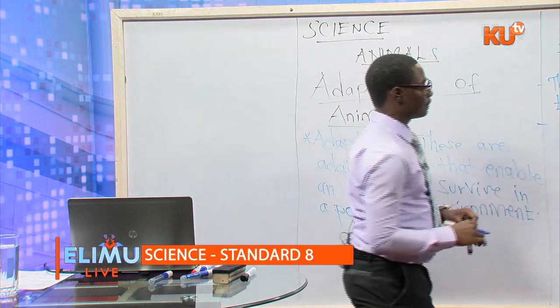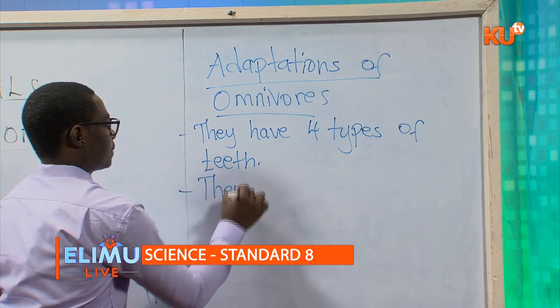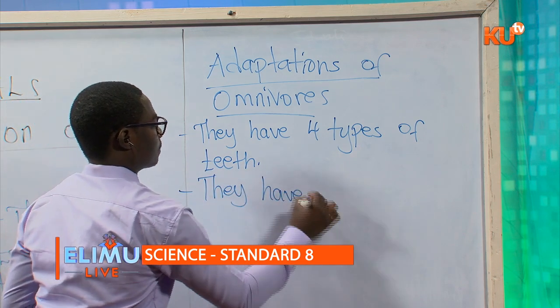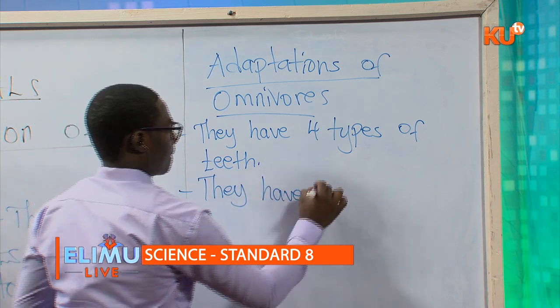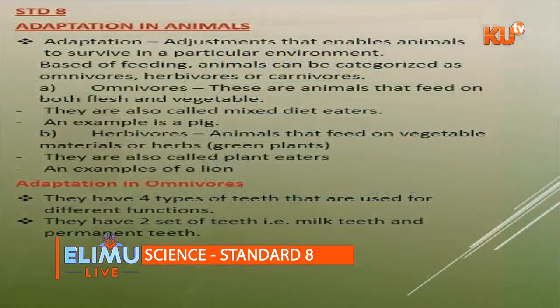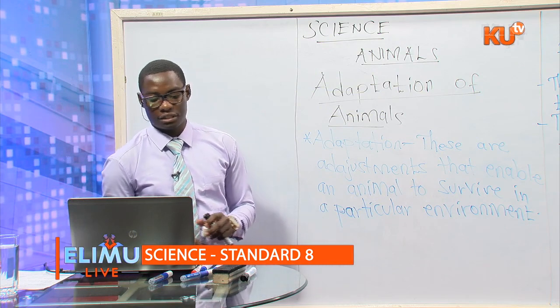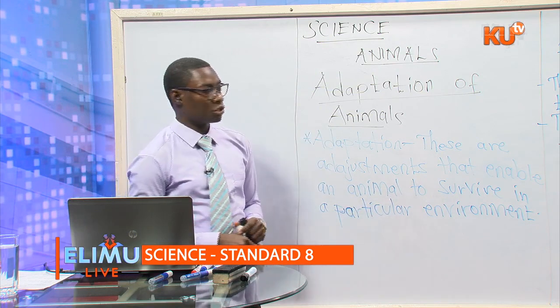Another adaptation for omnivorous animals is that they have two sets of teeth: primary teeth, also called milk teeth, and permanent teeth. Those are the adaptations of omnivores that we'll cover.